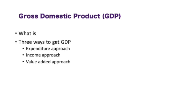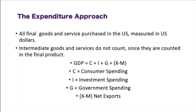Gross domestic product — what is GDP? GDP essentially is all the spending that we do in this country. There are three ways to get GDP, and it's a form of national accounting. The three ways to calculate GDP are the expenditure approach, the income approach, and the value-added approach. The expenditure approach measures all final goods and services purchased in the United States in US dollars in one given year.